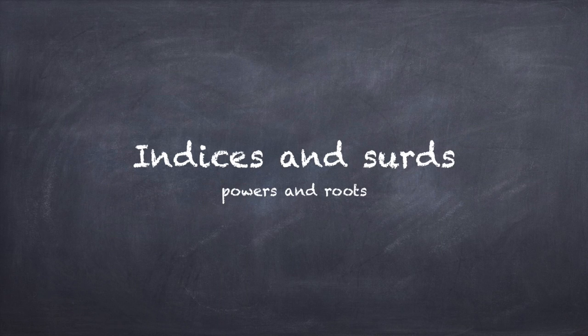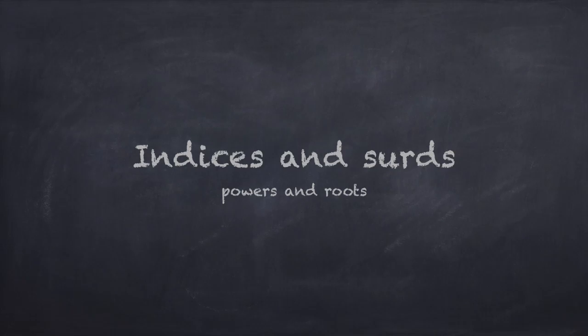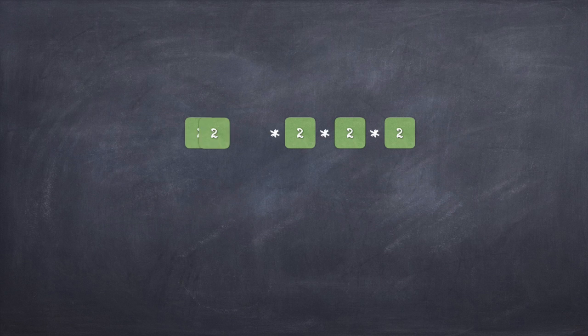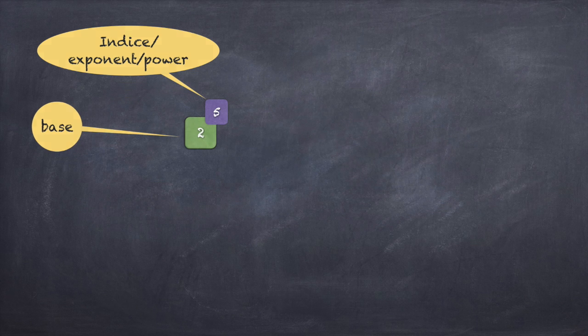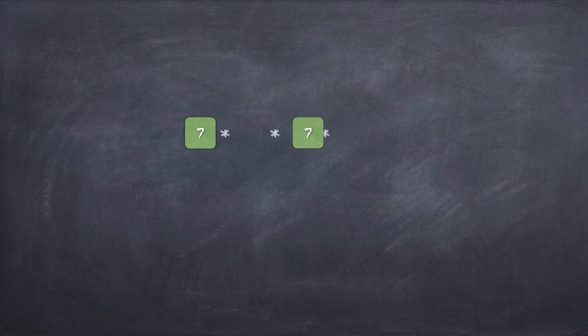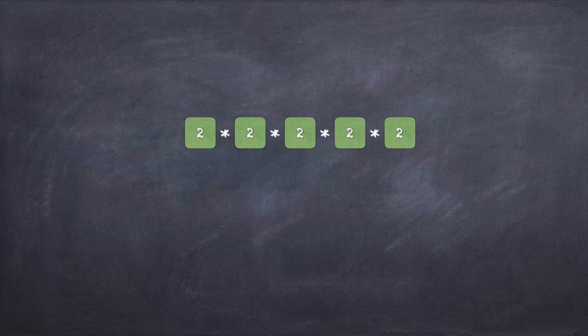Hi and welcome to another session on number systems. In this video we are going to discuss indices and powers given to numbers. So what do we mean by powers or what do we mean by an index? An index, if you look at the dictionary meaning, is a sign or a measure. In number systems and algebra, an index is a sign put on top of a number to indicate something — what it indicates and its meaning is what we'll try to understand.